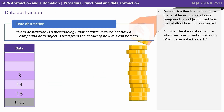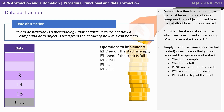And finally let's look at data abstraction. This is a methodology that enables us to isolate how a compound data structure is used from the internal details of how it's constructed. Consider the stack data structure which we've looked at previously. What actually makes a stack a stack? Well, simply that it's been implemented or coded in a way that you can carry out the operations of a stack.